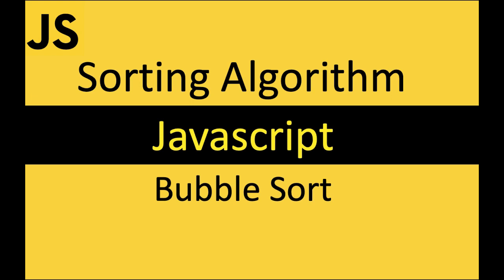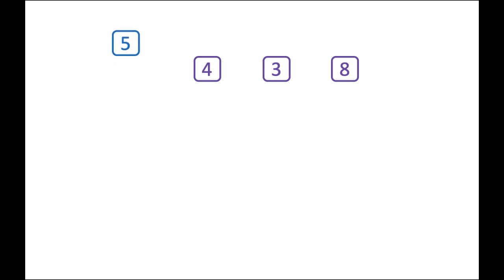Let's talk about bubble sort today. This is a very famous sort — when you start learning sorting, this is the very first sorting that one would learn. We'll try to see what bubble sort is all about. As an example, let's pick up a list of four numbers. Whatever number I pick to sort within a given list, I call that a key, and then we'll track down how we sort the entire list.